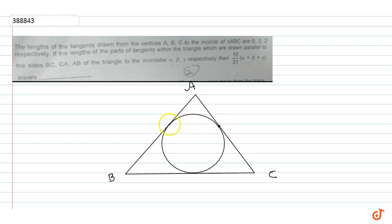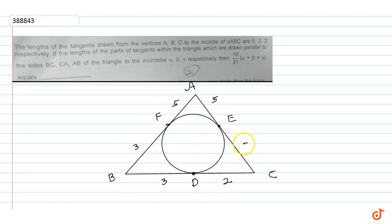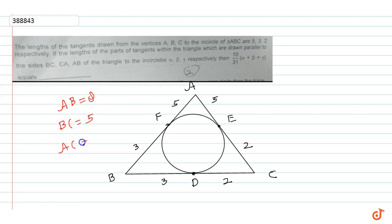This point is D, this point is E, and this point is F. So BD and BF are 3, and CE and CD are 2 and 2. AE and AF are 5. So AC is equal to 5 plus 2 = 7.